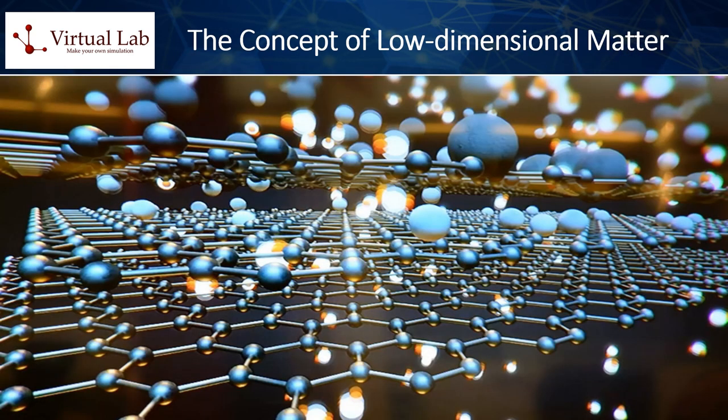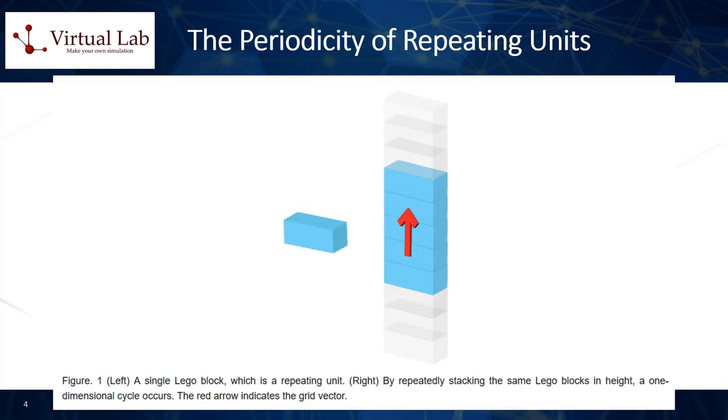For instance, one possible misunderstanding when encountering the term two-dimensional material is picturing it as a completely flat plane with no thickness. However, we understand that all matter is composed of atoms, so even the thinnest material is thicker than a single atom. The same principle applies to one-dimensional and zero-dimensional matter. A line without thickness is not equivalent to a point without width. Regardless of how low-dimensional the matter may be, it still possesses a certain volume.